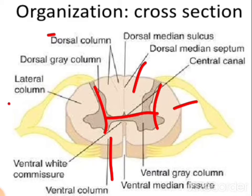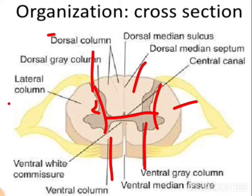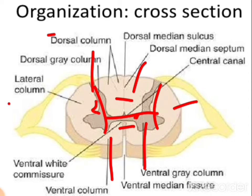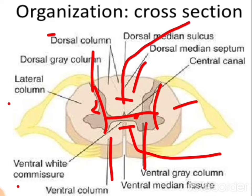The grey column is also organized similarly: the anterior part is the ventral grey column, the posterior part is the dorsal grey column, and in the thoracic region a small lateral grey column is found. The two columns on the right and left are connected through the grey commissure. The white columns are also connected on the anterior and posterior sides by a white commissure — the anterior white commissure (ventral) and the posterior white commissure (dorsal).